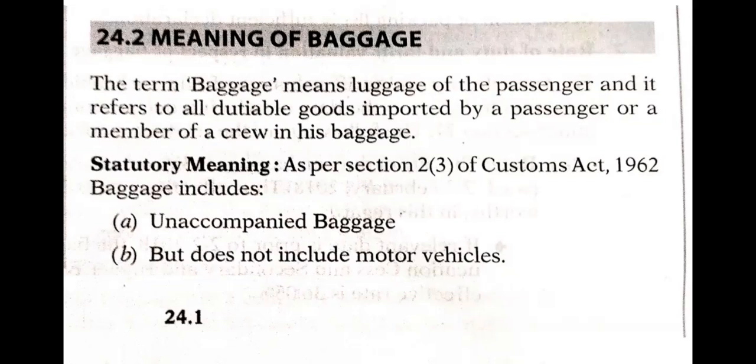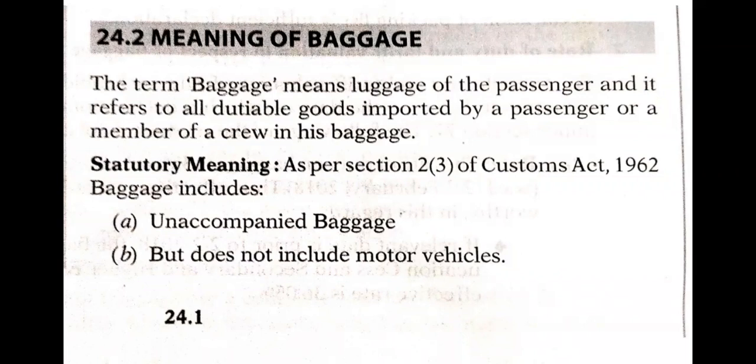As per Section 2, Subsection 3 of the Customs Act 1962, baggage includes accompanied baggage but does not include motor vehicles. So all dutyable goods included in luggage are called accompanied baggage, but if anybody is bringing a motor vehicle as luggage, those things are not called baggage.